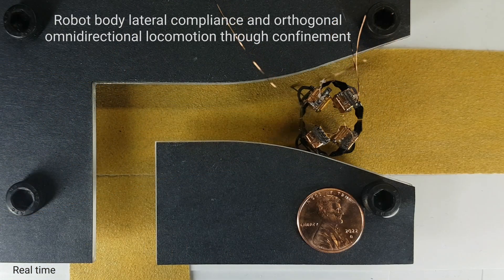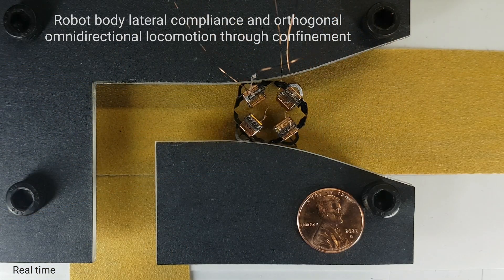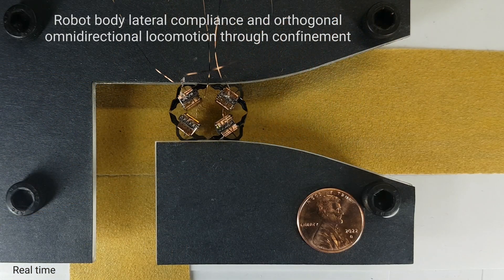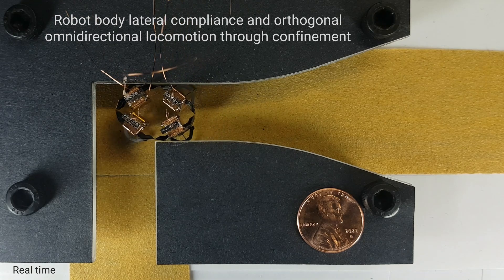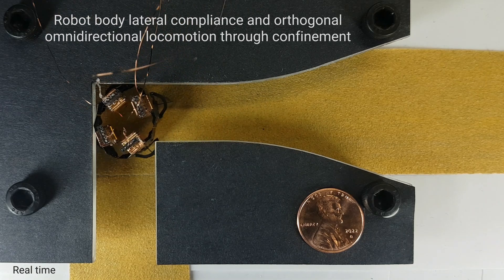The symmetry of the robot enables omnidirectional locomotion. The robot can naturally comply while still changing heading and shape into a new direction when required.